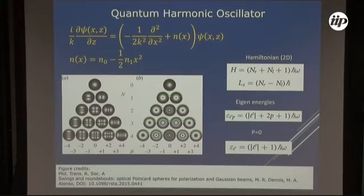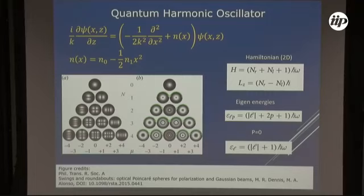We can have the energies given in terms of the orbital angular momentum and the radial number P. When P is different from zero, you have these external rings. When P is equal to zero, you have only one ring — one that looks like a donut. The energy is directly proportional to the orbital angular momentum in this analogy.